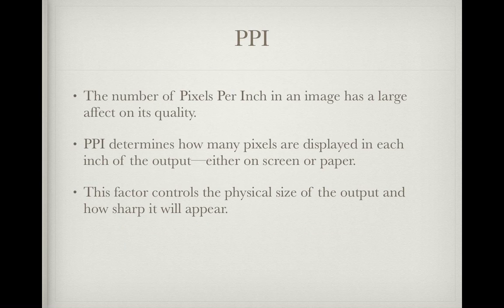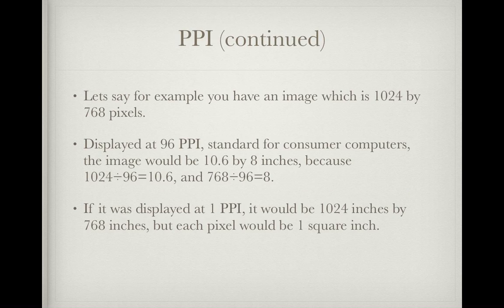PPI: the number of pixels per inch in an image has a large effect on its quality. PPI determines how many pixels are displayed in each inch of the output, either on screen or on paper. This controls the physical size of the output and how sharp it will appear when viewed. For example, an image which is 1024 by 768 pixels, displayed at 96 PPI — standard for consumer computer monitors —